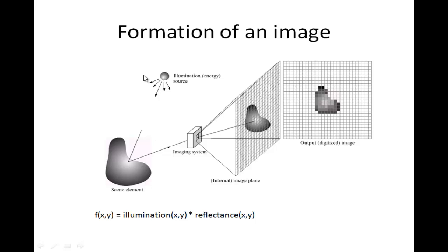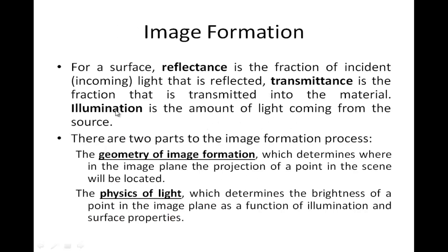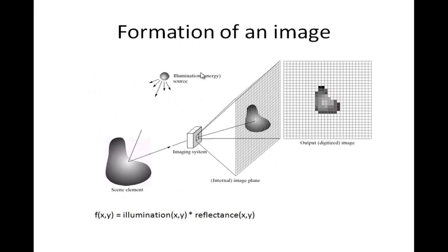So this is the object in question. Once some energy is incident on it, a part of the energy is reflected and a part is transmitted. Transmittance is the fraction that is transmitted into the material, whereas reflectance is the fraction of incident light which is reflected from that object. This reflectance is captured by the imaging system, which could be a digital camera, a pinhole camera, or any other imaging system. What we get is an analog signal from this imaging system, which can be modeled as the product of illumination and reflectance. Then using sampling and quantization, we are able to digitize this image, which we will see in the next lecture.